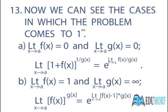Thirteenth (a): If we have two functions f(x) and g(x), and we know that limit x tends to a of f(x) equals 0 and limit x tends to a of g(x) equals 0, then limit x tends to a of (1 + f(x))^(1/g(x)) equals e raised to the power limit x tends to a of f(x)/g(x).